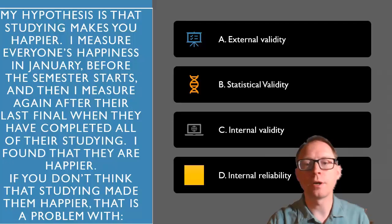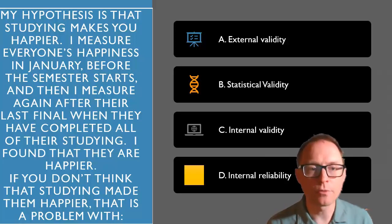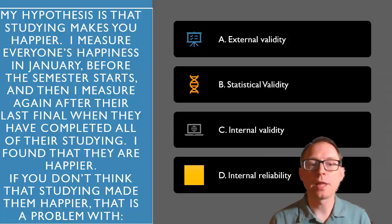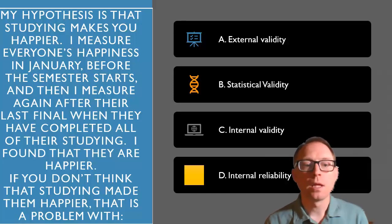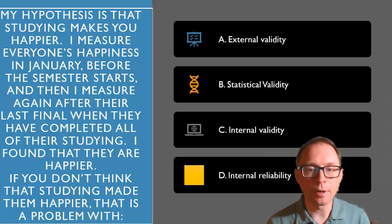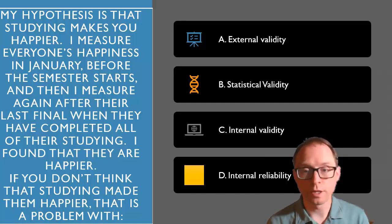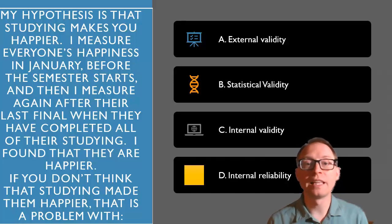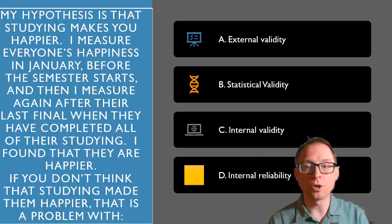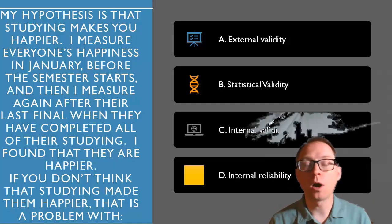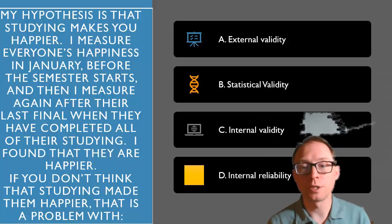This is a review question. Take a look at this scenario. My hypothesis is that studying makes you happier. I measure everyone's happiness in January before the semester starts, and then I measure again after their last final, when they've completed all of their studying. I found that they're happier. If you don't think that studying made them happier, that would be a problem with internal validity. Internal validity is saying that you actually have the independent variable causing the change in the dependent variable. So if you don't think that studying causes happiness, then you are doubting the internal validity of this particular study.